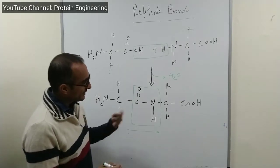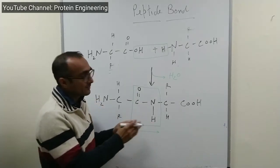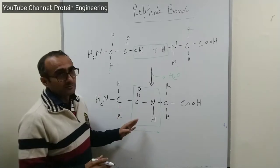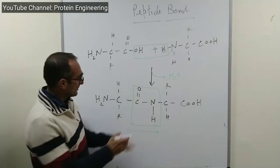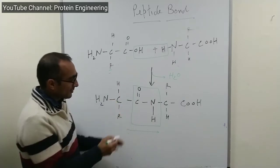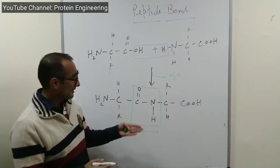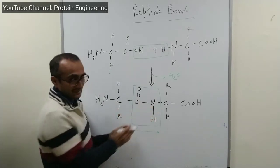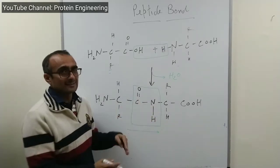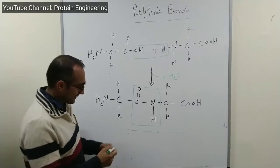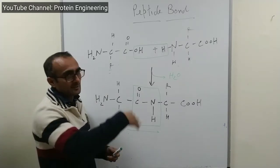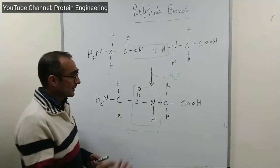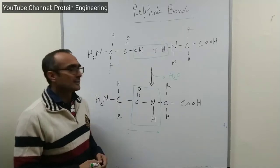This peptide bond formed between two amino acids gives special features to the polypeptide sequence. Initially, when the bond is not formed, amino acids have free single bonds — C-N, C-C — that can rotate freely. But when the peptide bond is formed, it gives rigidity and restricts the freedom of the amino acids. As a result, the protein acquires a specific shape in three-dimensional space, which is what we understand as protein folding.